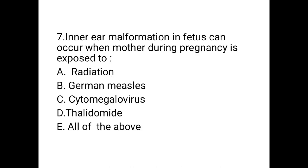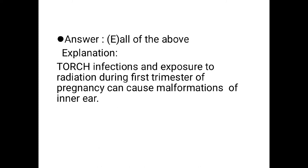Next question: inner ear malformation in the fetus can occur when the mother during pregnancy is exposed to — Option A: radiation. Option B: German measles. Option C: cytomegalovirus. Option D: thalidomide. Option E: all of the above. Option E, all of the above, is the correct answer. Explanation: TORCH infections and exposure to radiation during the first trimester of pregnancy can cause malformations of the inner ear.